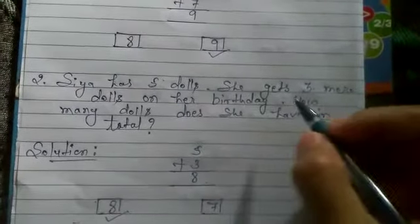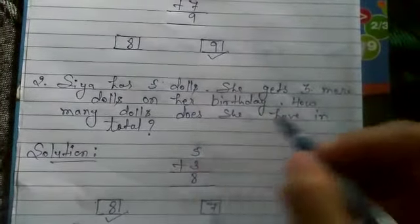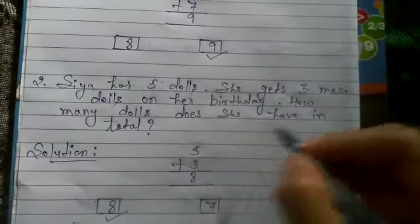We will solve the second question. Sia has five dolls. She gets three more dolls on her birthday. How many dolls does she have in total?